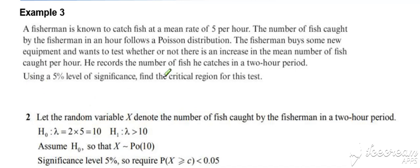And here in example 3, looking at finding the critical region for the test rather than actually performing the test. Again, be careful with the time period. Two-hour time period. This was quoted as five per hour, so we adjust lambda to 10 in our null and alternative hypotheses.